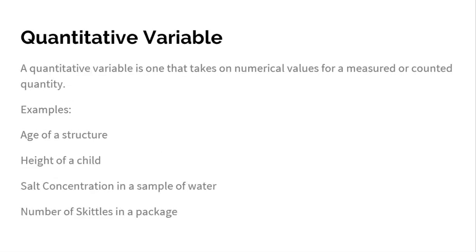The second type of variable is a quantitative variable. A quantitative variable is one that takes on numerical values for a measured or counted quantity. The answer to a question is a numerical value that is measured or counted. Go back to zip code. You don't measure somebody's zip code, and you don't count somebody's zip code. So those are two reasons why zip code is actually a categorical variable. But that's one of the only very few exceptions.